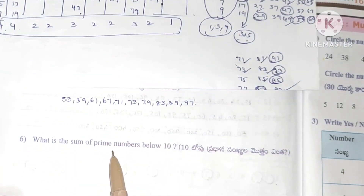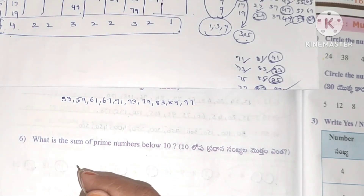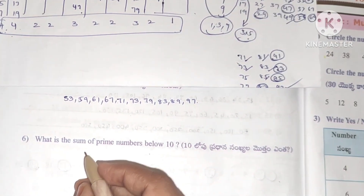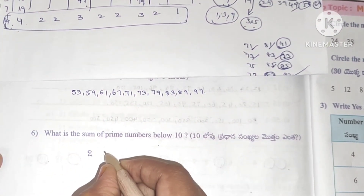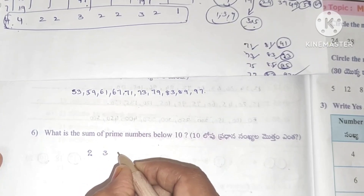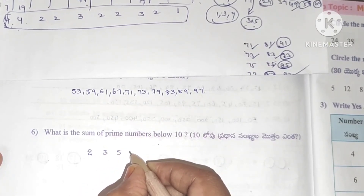Next question: what is the sum of prime numbers below 10? Prime numbers below 10 are: 2, 3, 5, 7.